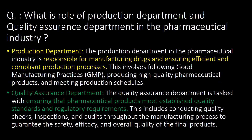What is the role of the production department and quality assurance department in the pharmaceutical industry? The production department is responsible for manufacturing drugs and ensuring efficient and compliant production processes, following GMP, producing high-quality pharmaceutical products, and meeting production schedules. The quality assurance department is tasked with ensuring that pharmaceutical products meet established quality standards and regulatory requirements, including conducting quality checks, inspections, and audits throughout the manufacturing process to guarantee the safety, efficacy, and overall quality of the final product.